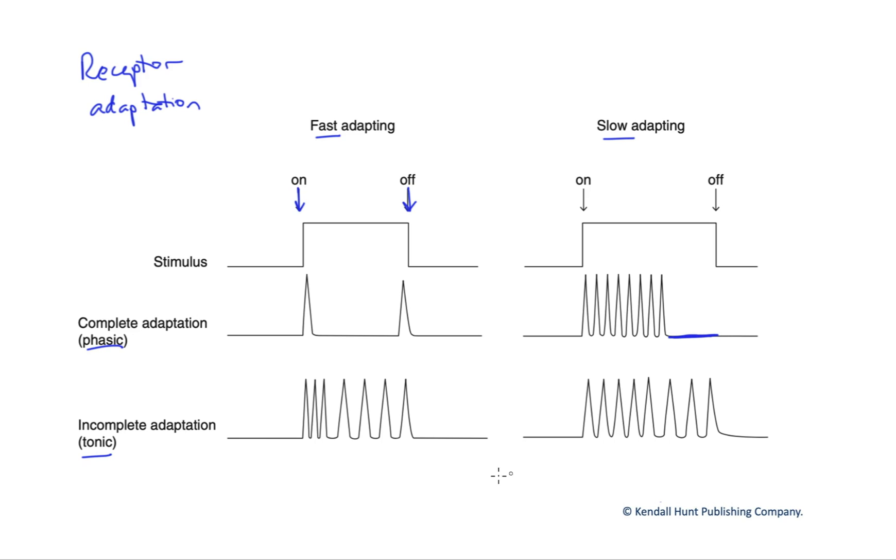And then in incomplete adaptation, often incorrectly identified as slow, we can have fast or slow. In fast, we shift to reduced receptor activity more quickly. And in slow, it takes a little bit longer for that to occur.